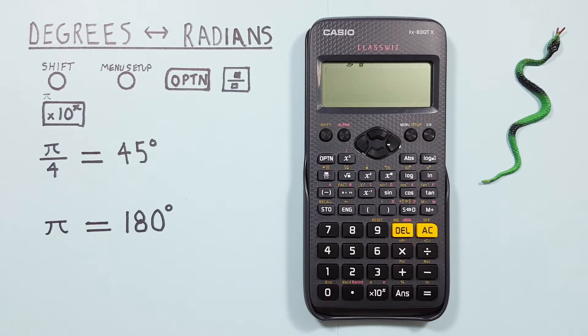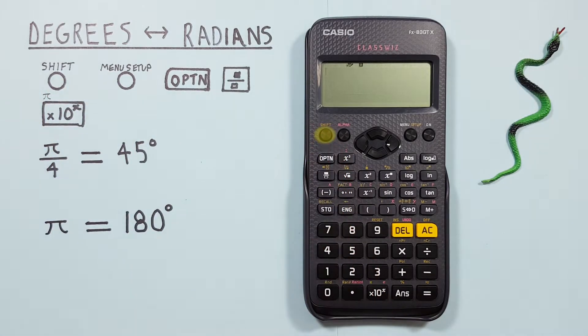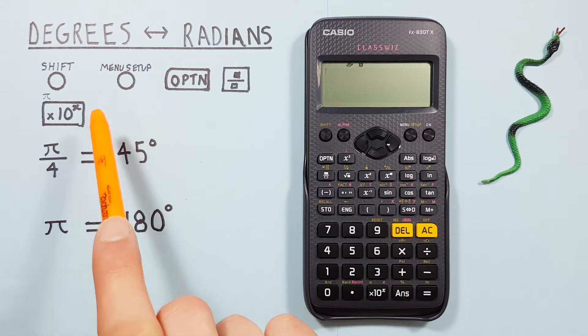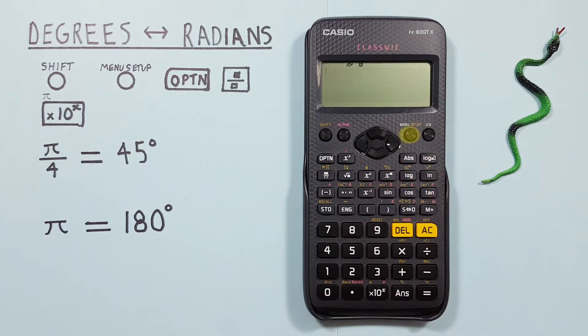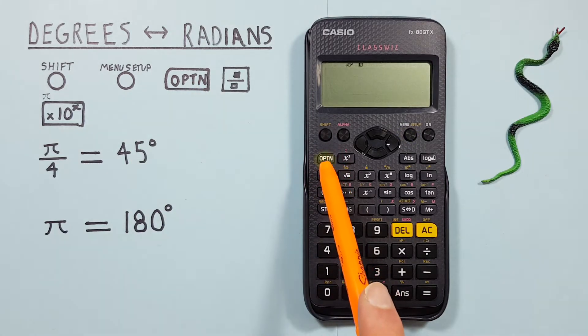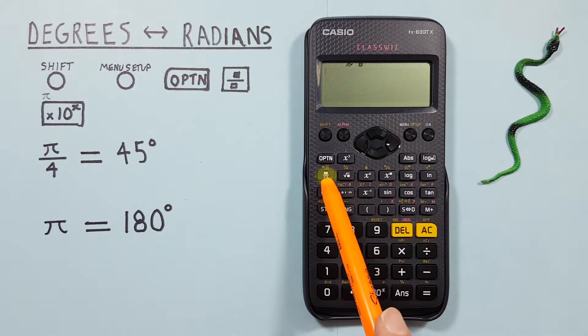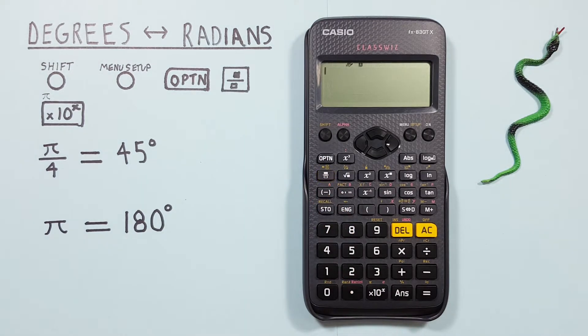To do this we'll use the Shift key located here, the Menu Setup key below the Shift key, the Fraction key below the Option key, and the x10 to the power of x key with the Shift function of Pi located here.